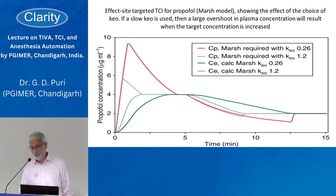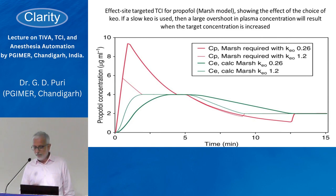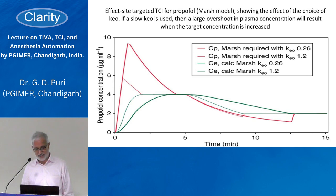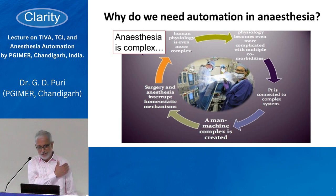If you use different KEO values in your model — accounting for volume of distribution and rate constants for distribution — you require different plasma concentrations to achieve a given effect-site concentration. With a KEO of 0.26 (slow distribution), you require a higher plasma concentration to reach the target effect site. With a KEO of 1.2, you may need only 6 micrograms/ml versus 9 micrograms/ml. Mind you, this high plasma concentration also reaches the heart before the brain, producing hemodynamic disturbances — especially dangerous in vulnerable patients.